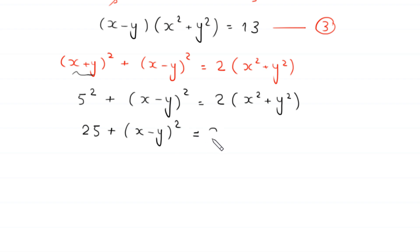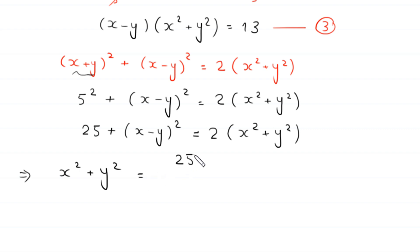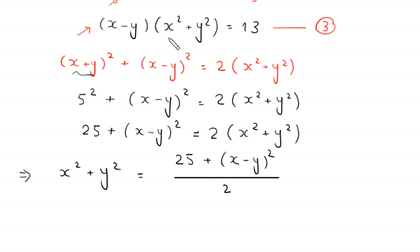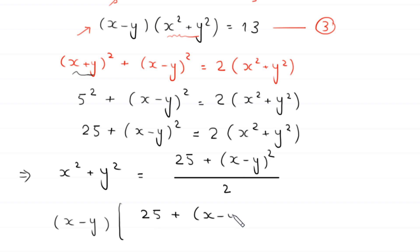If we divide both sides by 2, this implies that x squared plus y squared equals (25 plus (x minus y) whole squared) divided by 2. Now in equation number 3 we replace x squared plus y squared with this value, so equation 3 becomes: (x minus y) times (25 plus (x minus y) whole squared) divided by 2 equals 13.